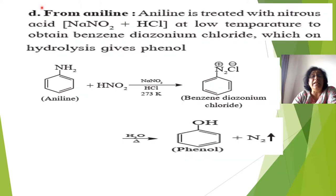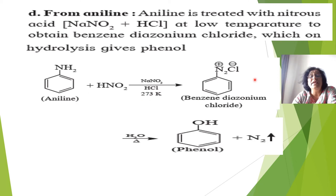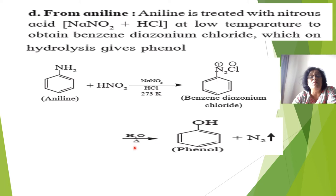From aniline: first prepare benzene diazonium chloride by reacting aniline with NaNO₂ and HCl at 0°C (273 Kelvin). Aniline combines with HNO₂ and HCl to form benzene diazonium chloride (benzene–N₂⁺ Cl⁻). On hydrolysis with warm water, phenol is formed and nitrogen gas is given out.